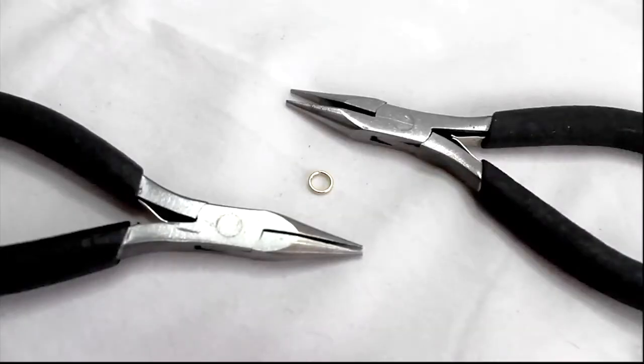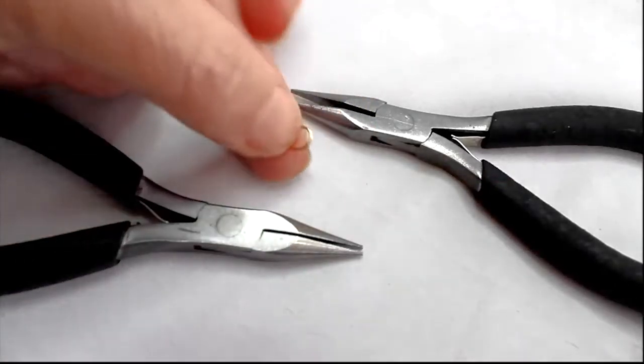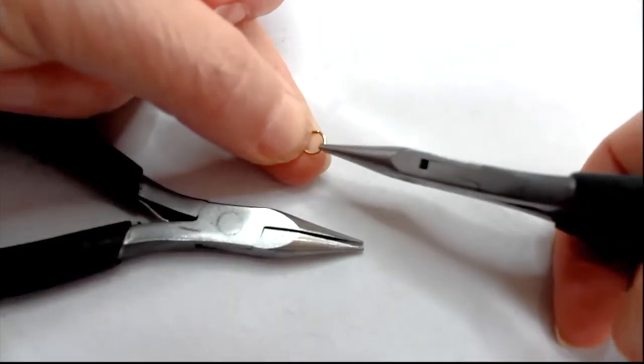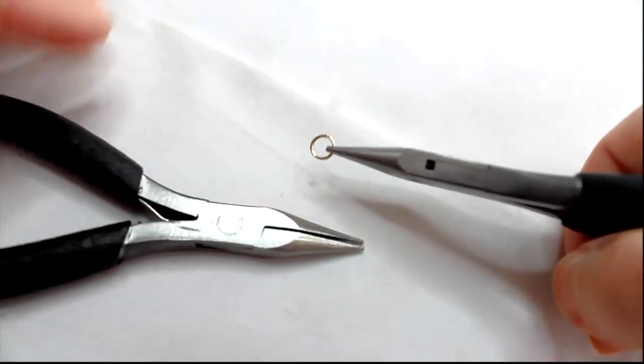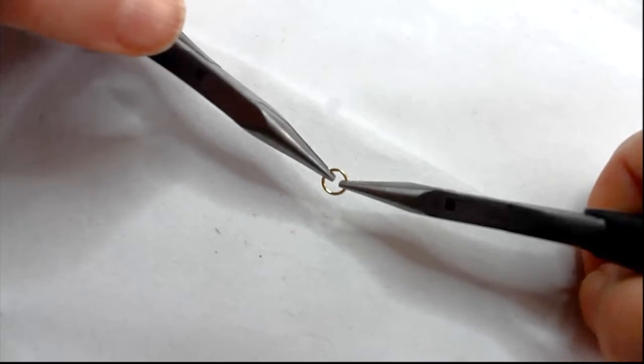To open and close jump rings, you need two pairs of pliers. Pick up the jump ring in your left hand with the opening facing towards the top and then using pliers in your right hand, grip the jump ring between 2 o'clock and 3 o'clock. With pliers in your left hand, grip the jump ring between 9 o'clock and 10 o'clock.